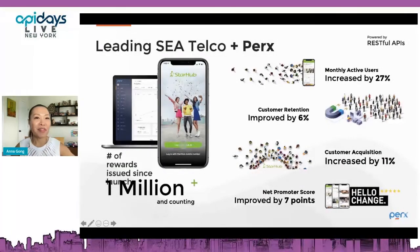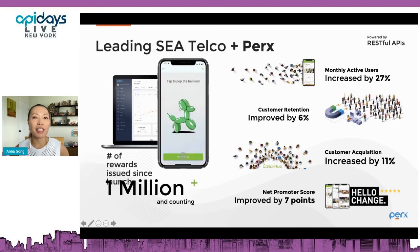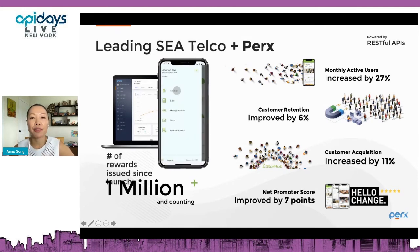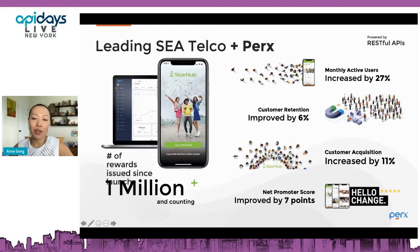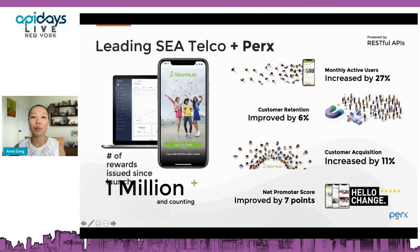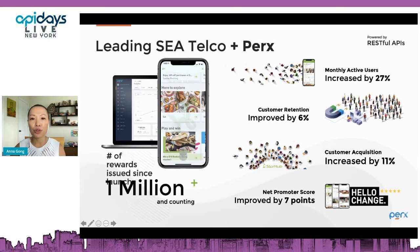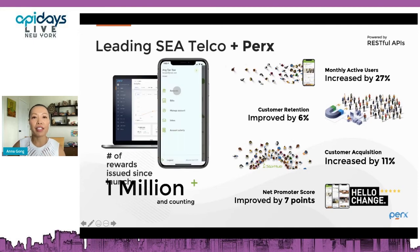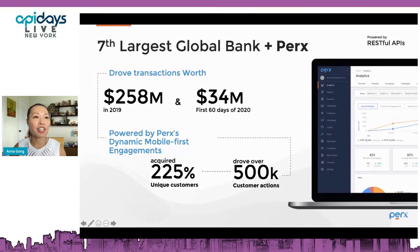Another telco in Singapore leveraged us for their gamification engagement platform. After 100 days of launch during the core of the pandemic, their monthly active users increased by 27%, customer retention increased by 6%, acquisition increased by 11%, and NPS rose by 7 points. These are the client's own KPIs. It really depends on which business problem statement or KPI is most urgent at that time.